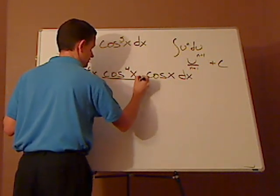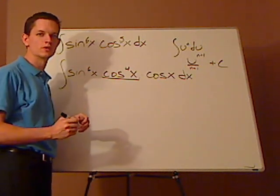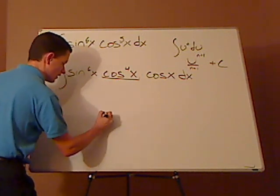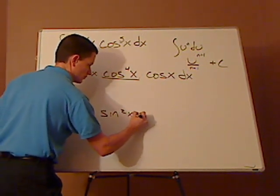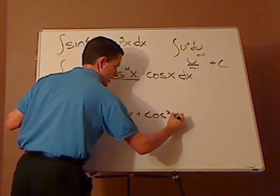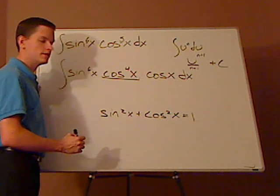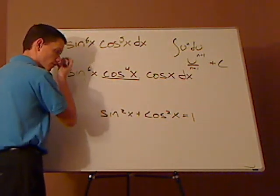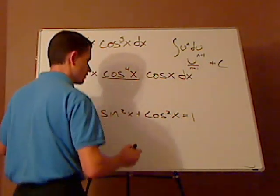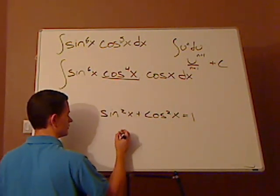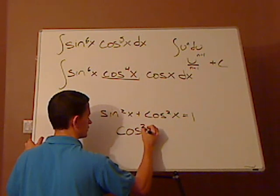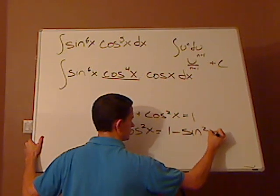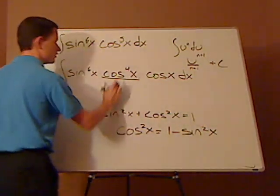So we're just going to take this and what we're going to be doing is using a trig identity. You have sine squared x plus cosine squared x equals 1. That's a trig identity that you learned from trig. Now, I'm going to take that and I'm going to solve for cosine squared. Once I do that, it's just in terms of 1 and cosine squared x equals 1 minus sine squared x.